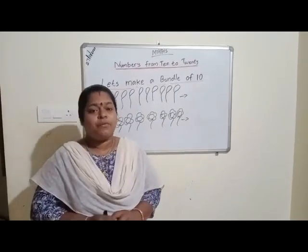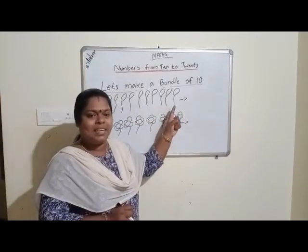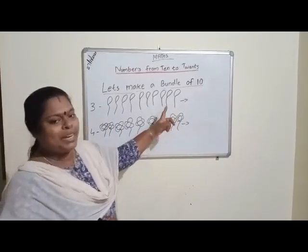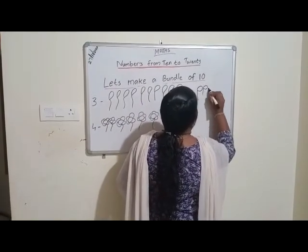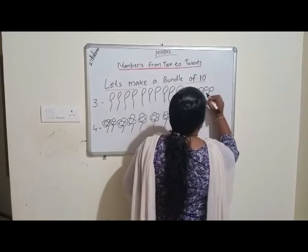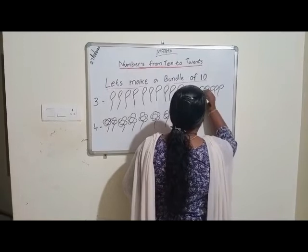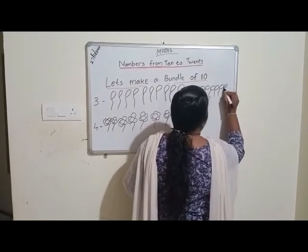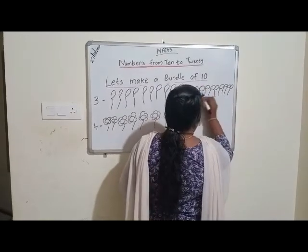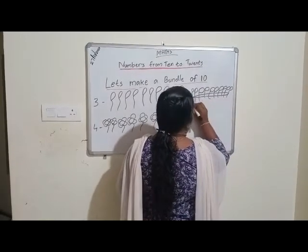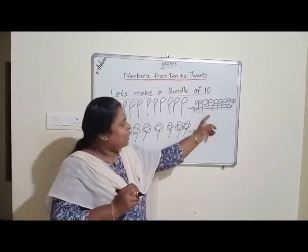Let's make one more bundle of 10. We have 10 balloons. I have tied the balloons together. 3, 4, 5, 6, 7, 8, 9, 10. Now this is a bundle of 10.